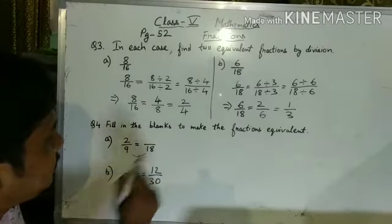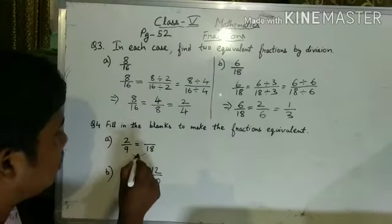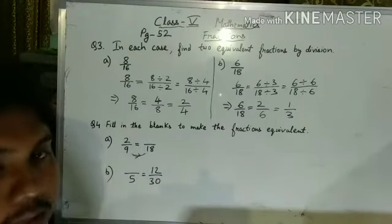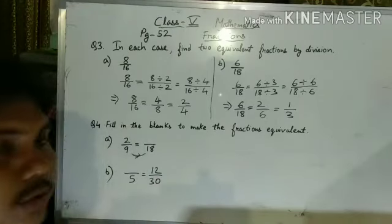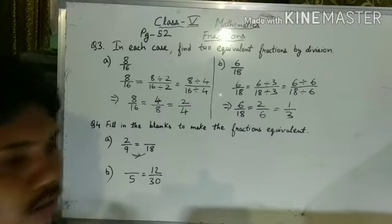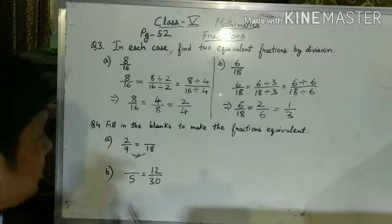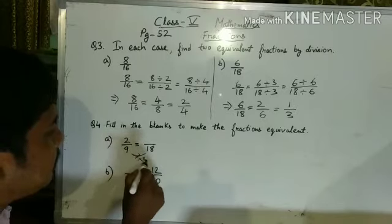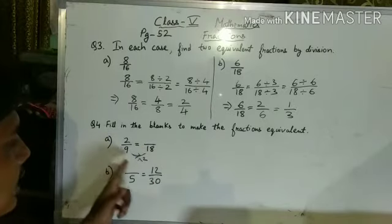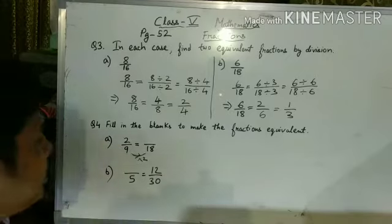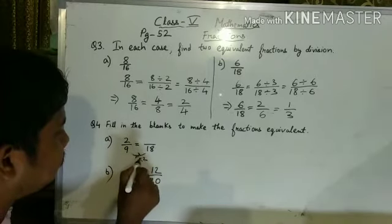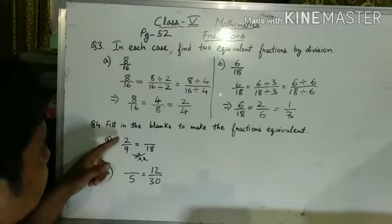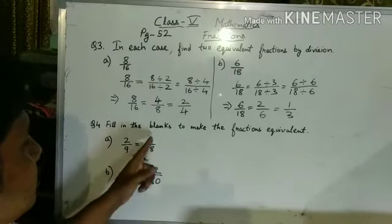Now, 9, 18. How the 9 can become 18? So, we have to do either multiply or we have to do divide. We cannot do plus or minus. So, 9 can become 18 if 9 is multiplied by 2. 9 into 2 is 18. 9 to the 18. Same way, we have to do 2 to the 4.